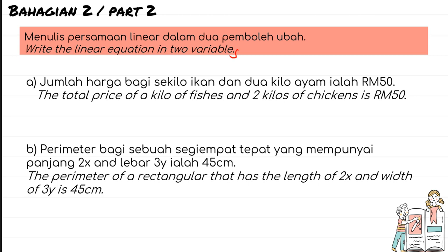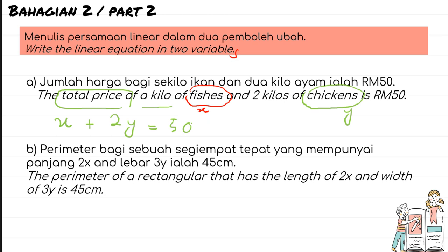Part two: write a linear equation in two variables from the given situation. First example — the total price of a kilogram of fish and two kilograms of chicken is RM50. We let x represent fish and y represent chicken. So the equation is: x + 2y = 50.